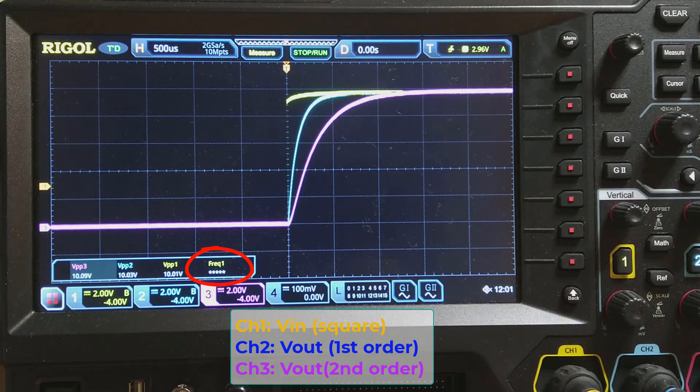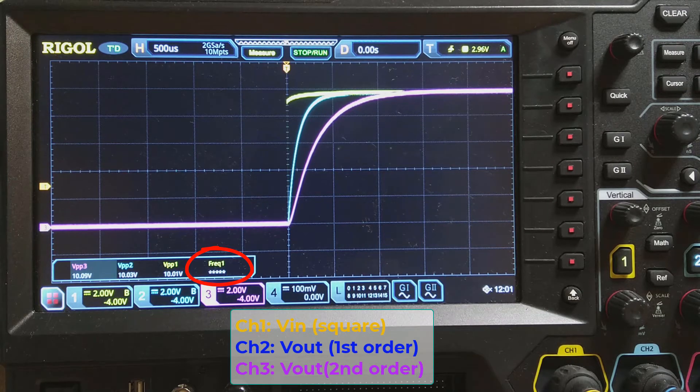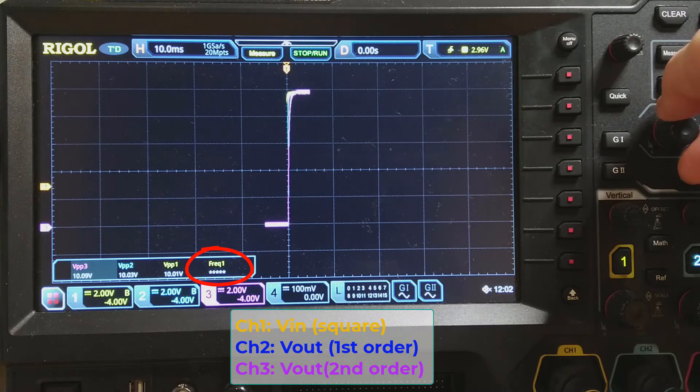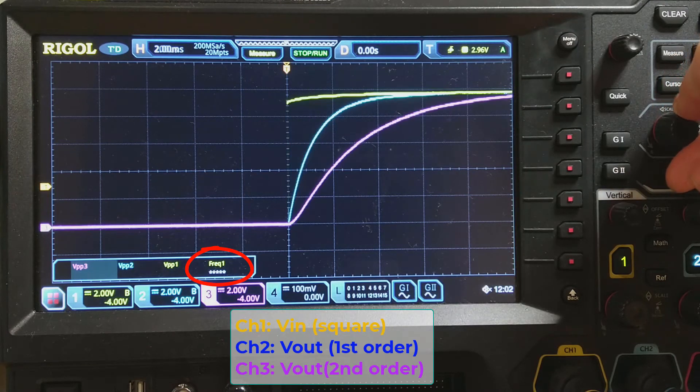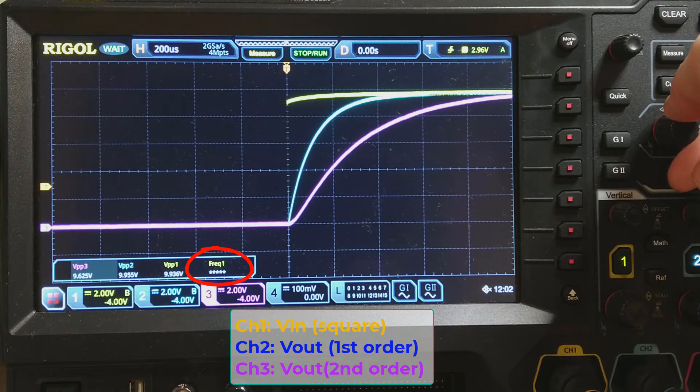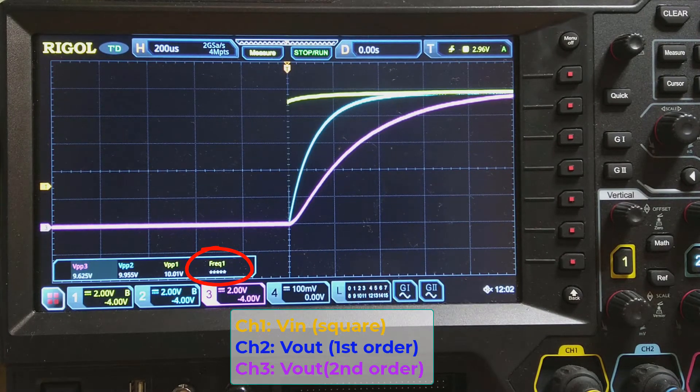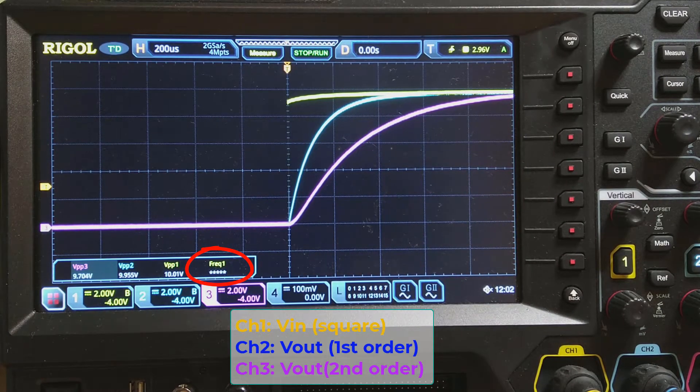Right now, the input frequency is at 10 Hz. After we zoom in on the scope, it shows the step response of the first-order and the second-order low-pass filters. Apparently, the second-order filter is much slower than the first-order.